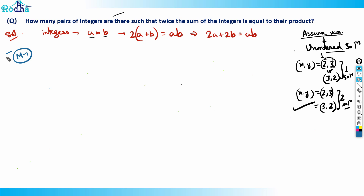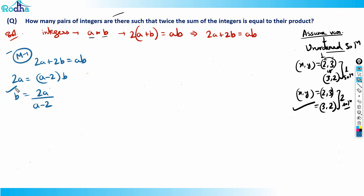Now let's look at Method 1. We have 2a + 2b = ab. I can write 2a = (a − 2)·b, so b = 2a / (a − 2). This is a standard algebraic form where we have a variable in the denominator. We want to rewrite the numerator so it contains (a − 2), allowing cancellation.